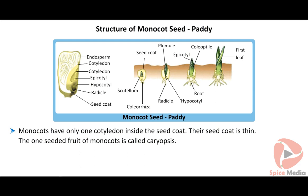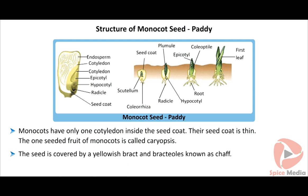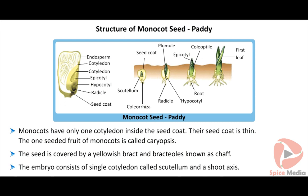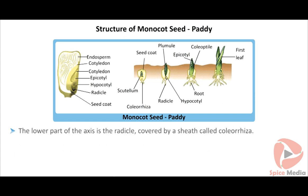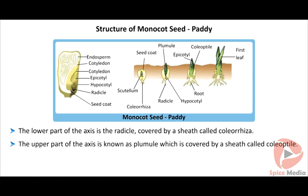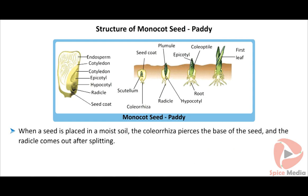In monocots, the seed coat is very thin. The one-seeded fruit of monocots is called caryopsis. The seed is covered by a yellowish bract and bracteoles, commonly known as chaff. The embryo consists of a single cotyledon called the scutellum and a shoot axis. The lower part of the axis is the radicle, covered by a sheath called coleorhiza. The upper part of the axis is the plumule, covered by a sheath called coleoptile.